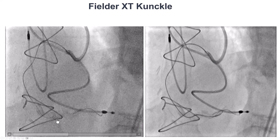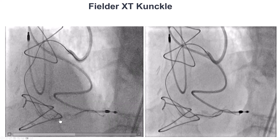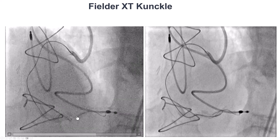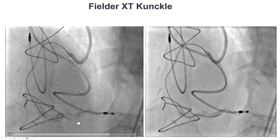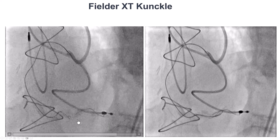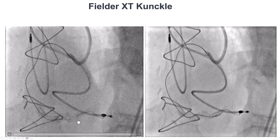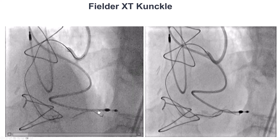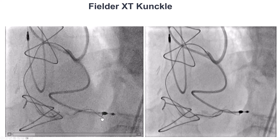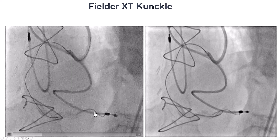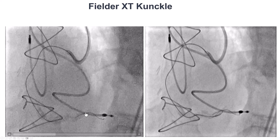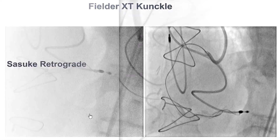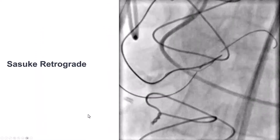After the Carlino technique, we were able to advance a Finecross XT in knuckle mode and advance towards the PDA-PLB bifurcation. Unfortunately, the wire was now in the extra-luminal space, and because of the bifurcation, we did not want to attempt re-entry, as we were concerned about losing one of the side branches.